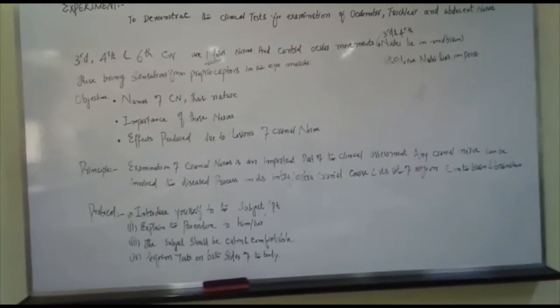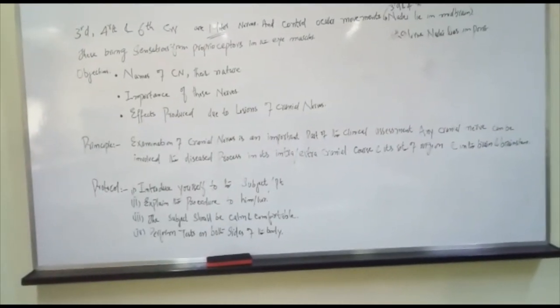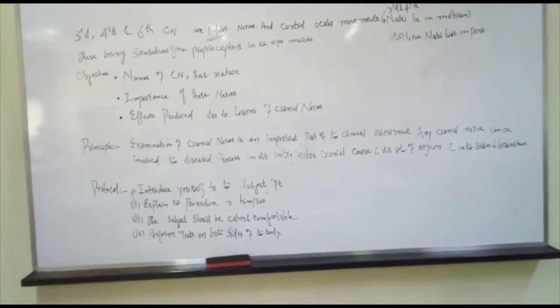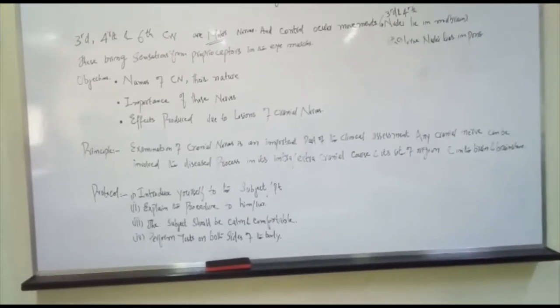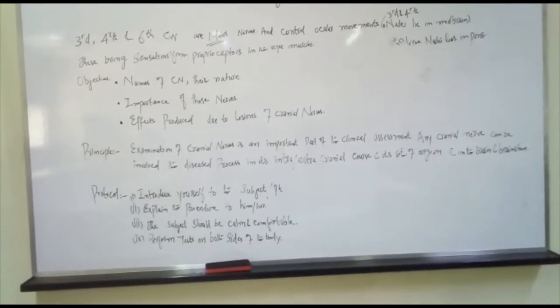Principle: Examination of cranial nerves is an important part of the clinical assessment. Any cranial nerve can be involved in the disease process in its extra or intracranial course and its site or region within the brain or brainstem.